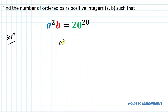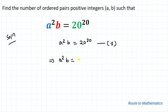We have given a²b = 20²⁰ — let's take it as equation 1. In the next step, let's do prime factorization. So we can write 20²⁰ as 2 to the power 40 multiplied with 5 to the power 20. Let's take this as equation 2.